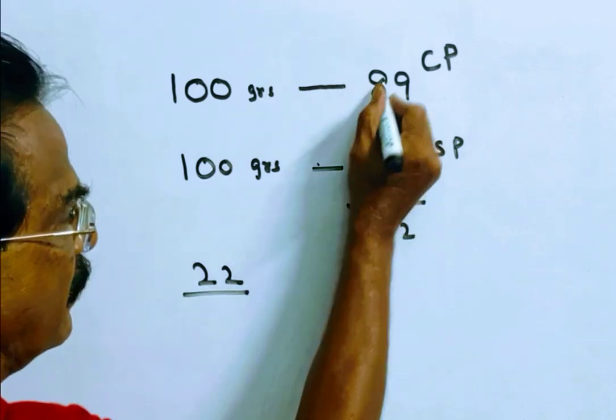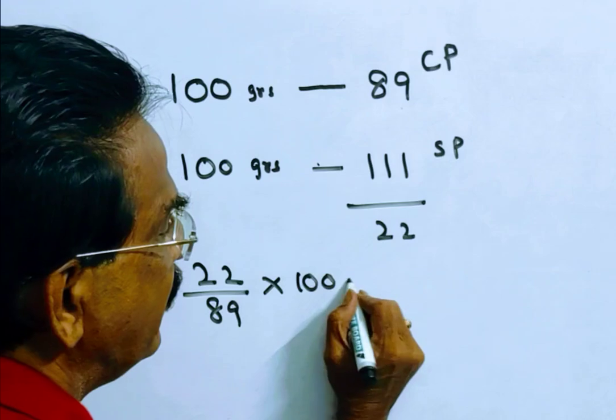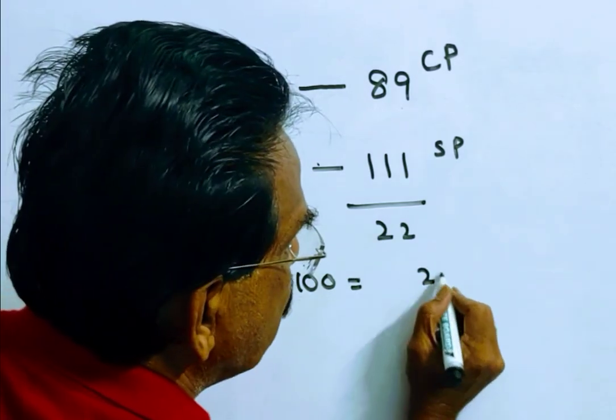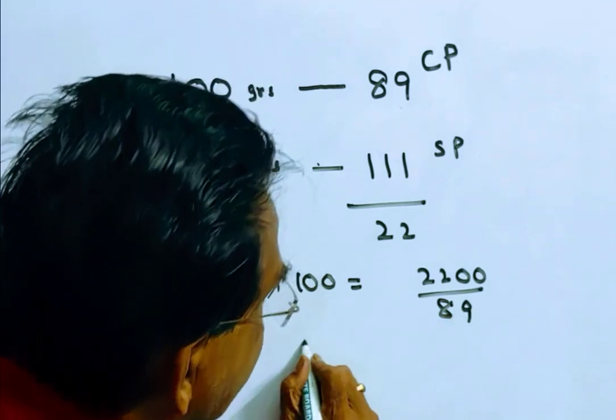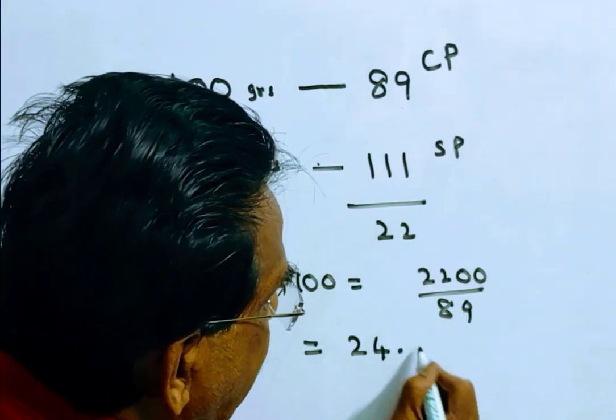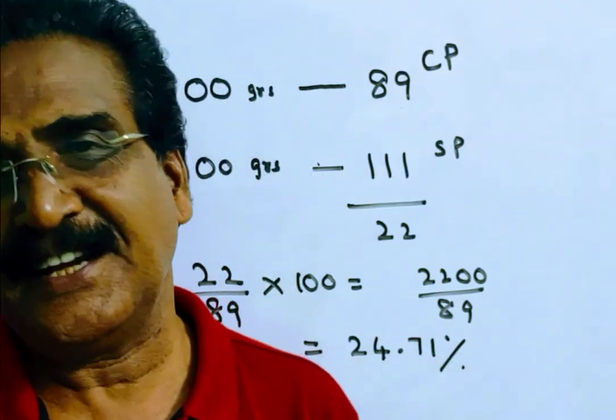Profit over cost price into 100. This implies 2200 by 89. This gives 24.71%. Thank you.